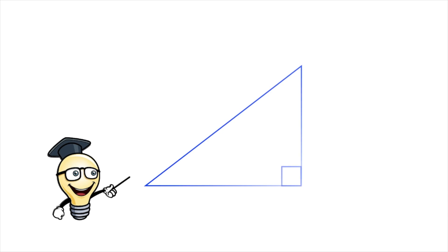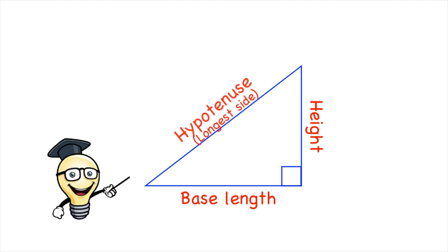Have you ever seen questions like this where you're given a diagram of a triangle, a right angle triangle, you're given the base length and you're given the height and you're asked to find the length of the longest side or the hypotenuse? How would you go about doing that?